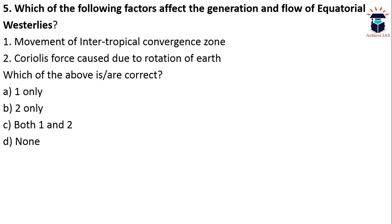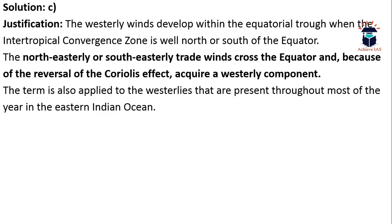The next question: Which factors affect the generation and flow of equatorial westerlies? First — movement of the Intertropical Convergence Zone (ITCZ); second — Coriolis force due to Earth's rotation. Both statements are correct. In summers, the ITCZ shifts northward due to intensive heating of land in the northern hemisphere. This causes the southeastern trade winds to cross the equator and flow westward due to the Coriolis force, generating equatorial westerlies. This can be better understood by reading NCERTs.